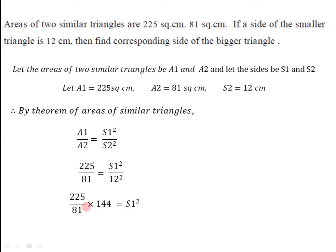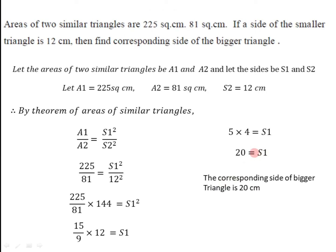Taking the square root of both sides: √225 = 15, √81 = 9, √144 = 12, so s1 = (15/9) × 12. Simplifying, we get 5 × 4 = 20. Therefore s1 = 20 centimeters, meaning the corresponding side of the bigger triangle is 20 centimeters.